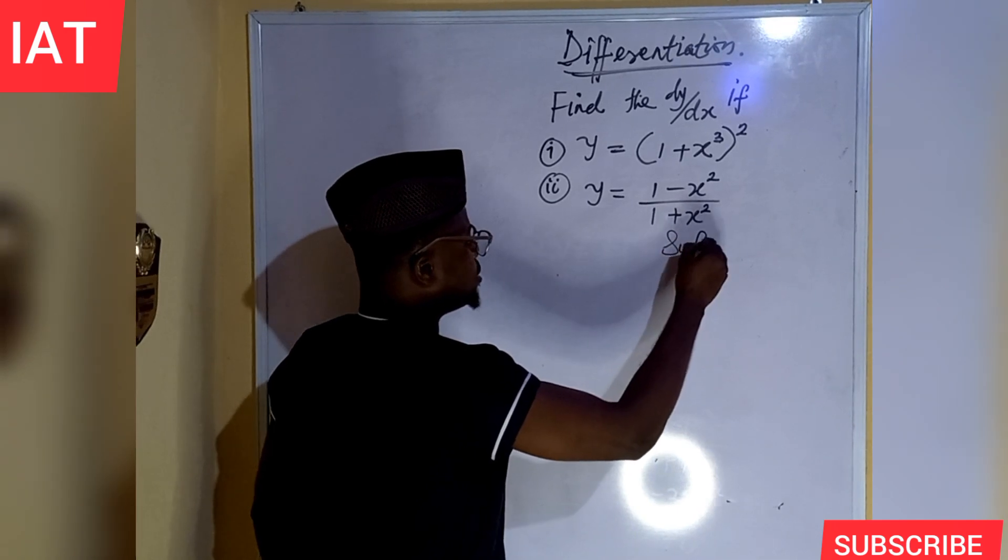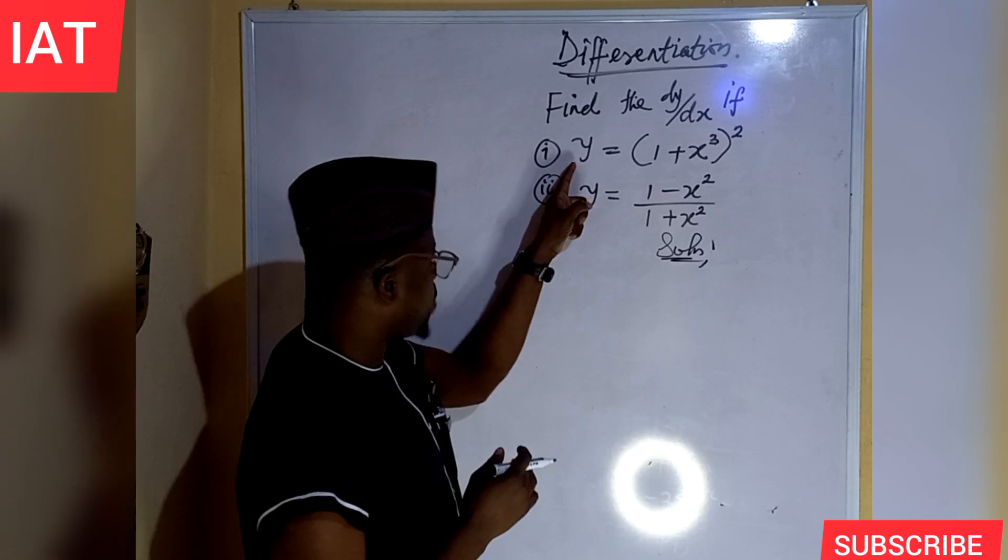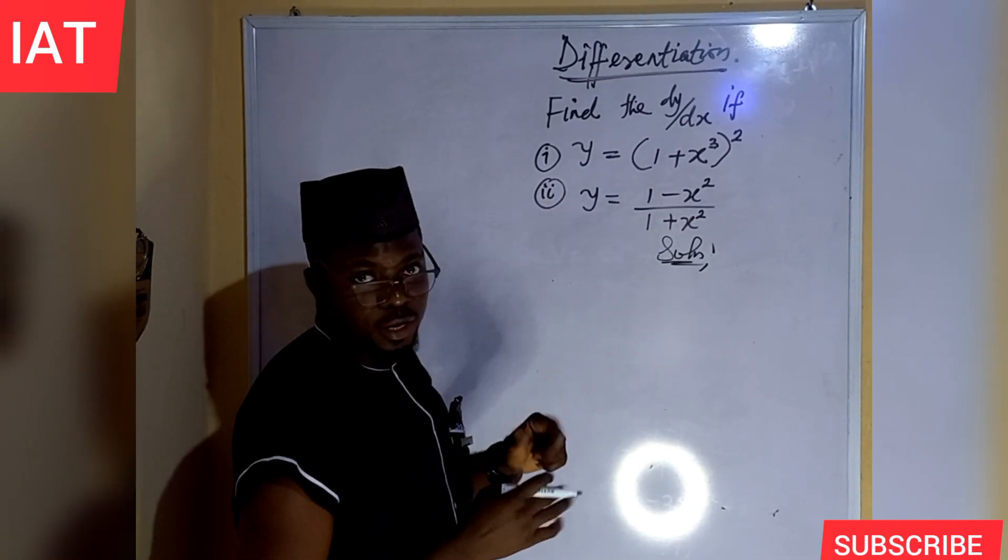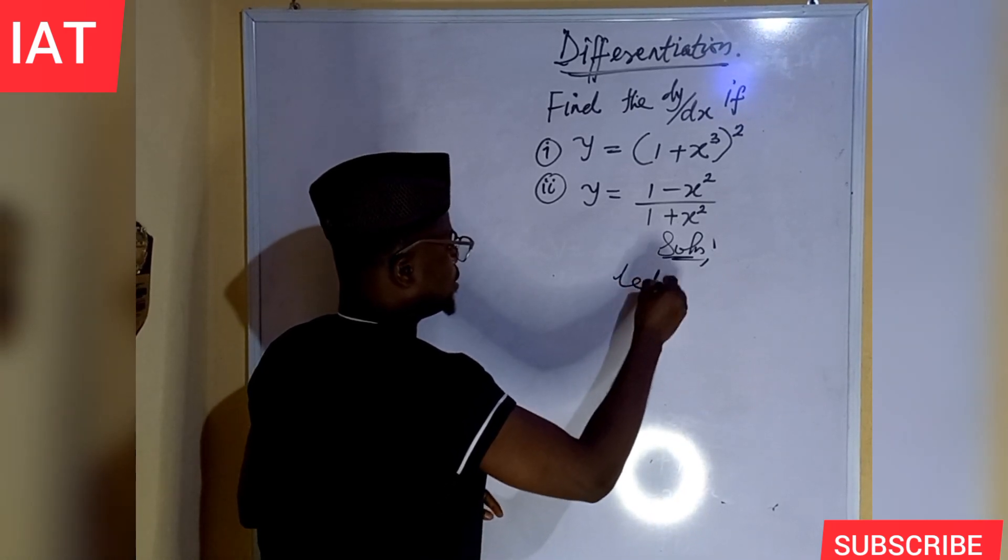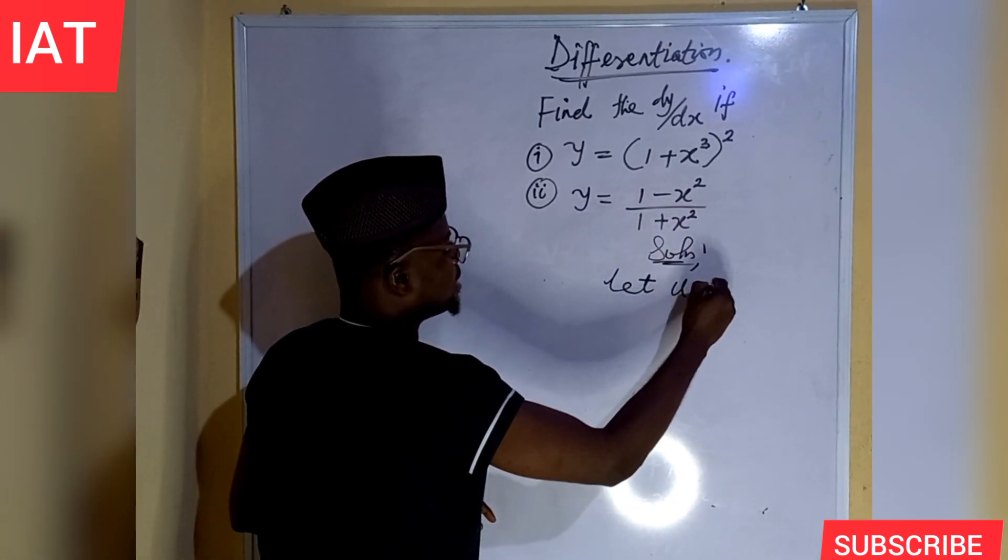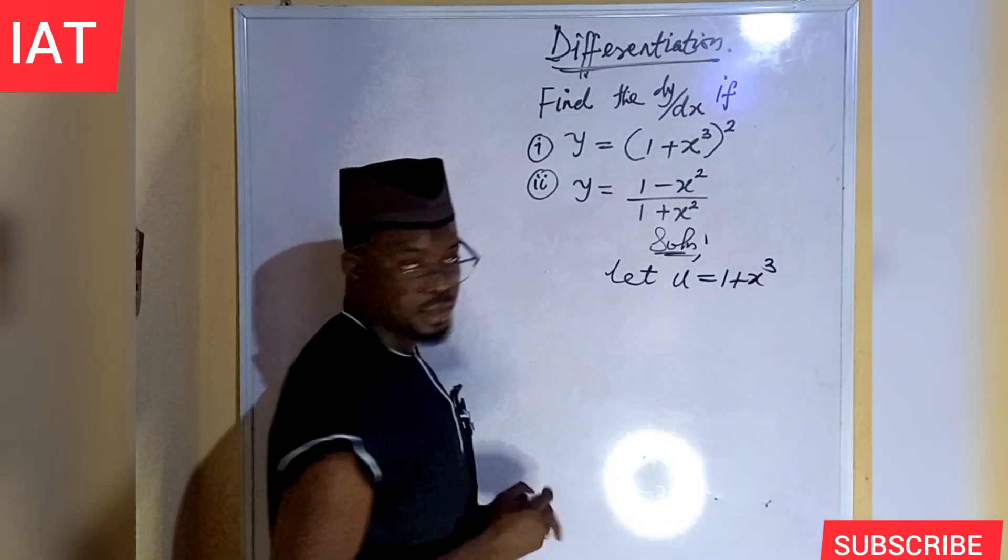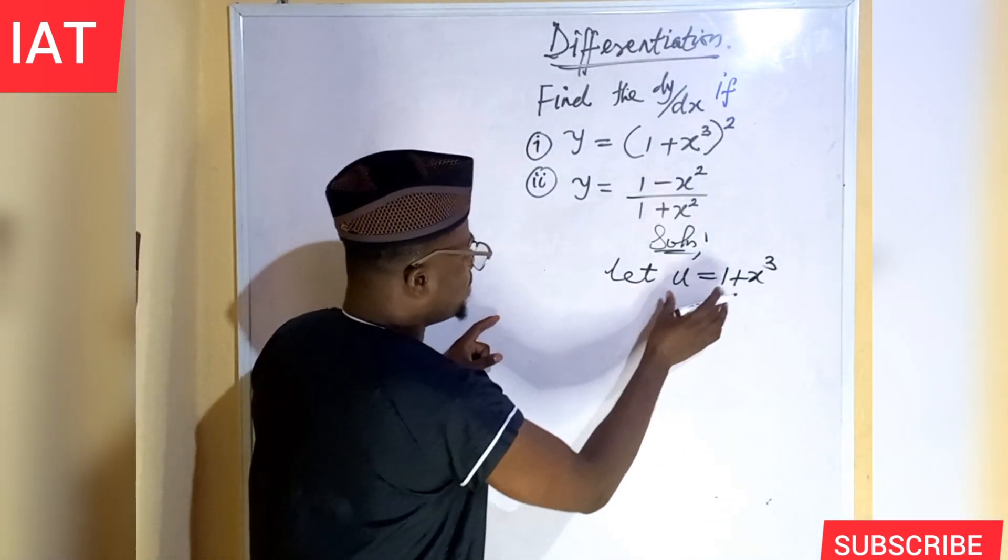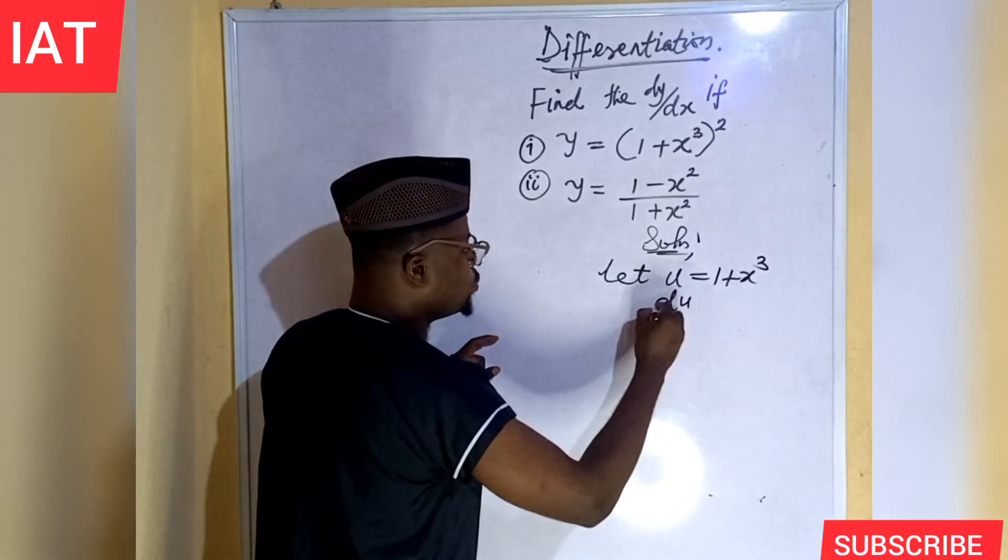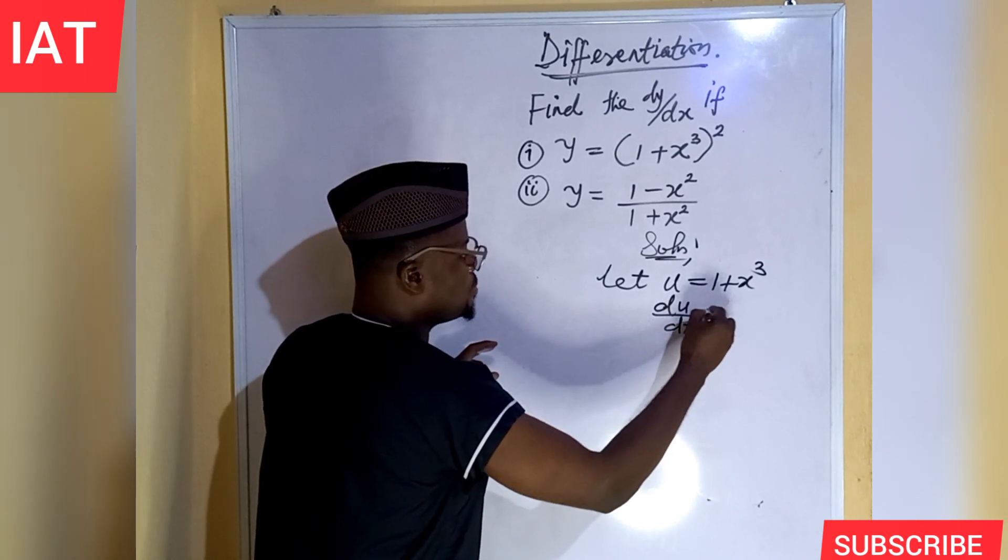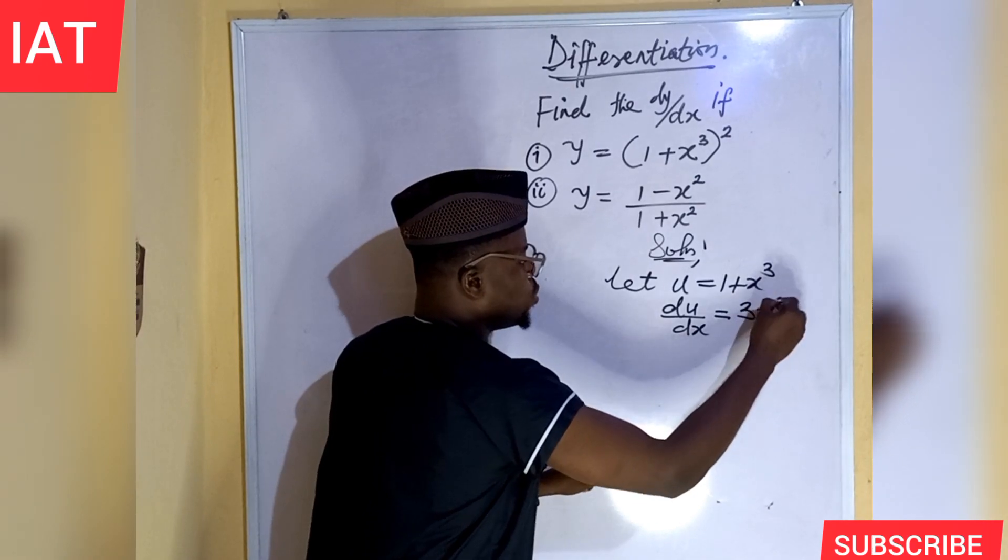Now the solution is this. Since we're asked to find the derivative of y with respect to x, look at the assumptions I'm going to make. Let u be represented as 1 plus x raised to the power of 3. At this point, I'm going to differentiate this u with respect to x. So I have du over dx. And the result I will have here is 3x squared.